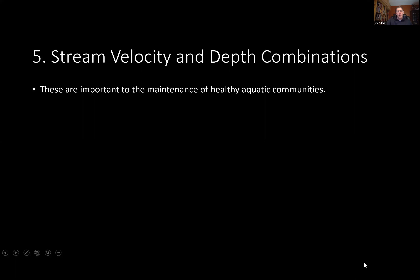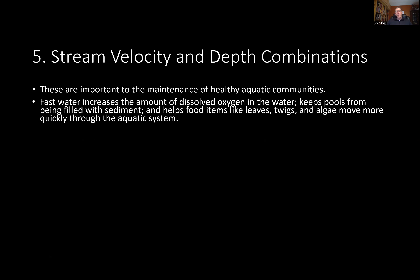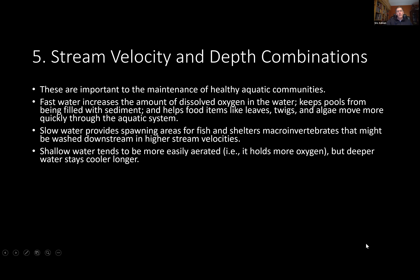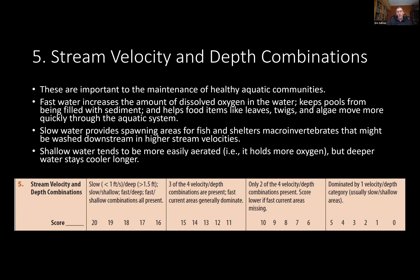The next characteristic is a combination of stream velocity and depth. You really want a variety of velocity and depth combinations. Fast water benefits dissolved oxygen and keeps pools from filling up and brings things into the food chain. Slow water provides shelter areas. Shallow water running through a riffle can be more easily aerated but warms up more quickly. You're looking for how many of these different combinations are present.